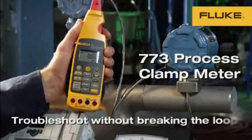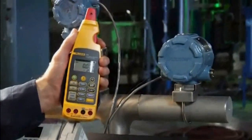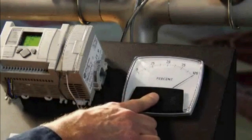The Fluke 773 processed milliamp clamp meter is great for troubleshooting without breaking the loop. The local indicator shows that the processed loop in a temperature transmitter is in alarm.